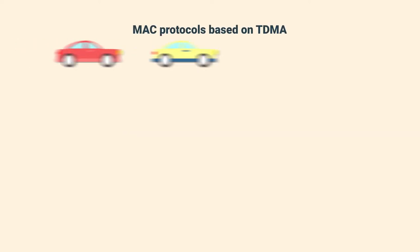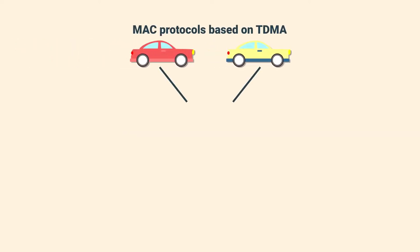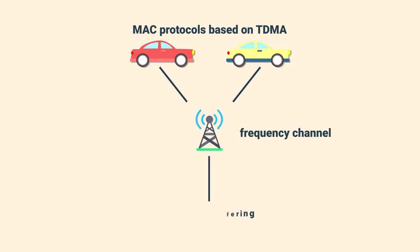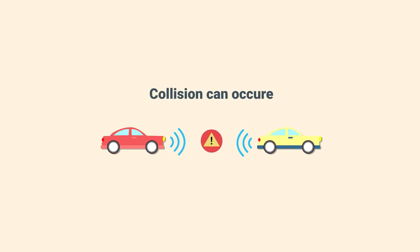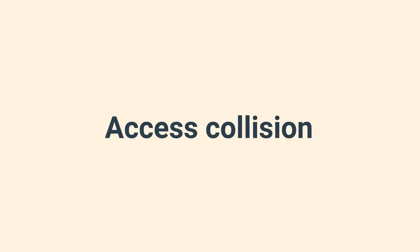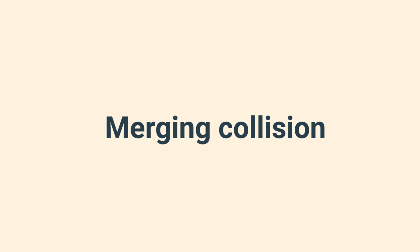Recently, MAC protocols, notably those based on the TDMA technique, have been used to enable multiple vehicles to use the same frequency channel without interfering with other vehicles' transmissions. When a distributed scheme is used to allocate a time slot, two types of collision can occur: access collision between vehicles trying to access the same available time slots, and emerging collision between vehicles using the same time slots.